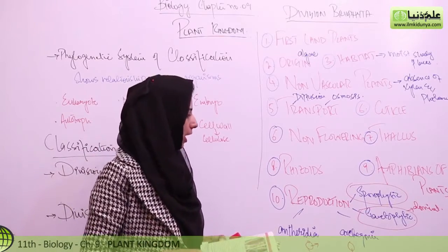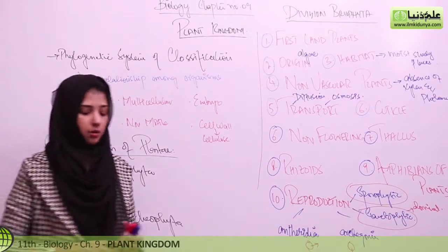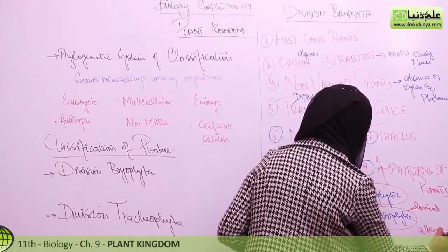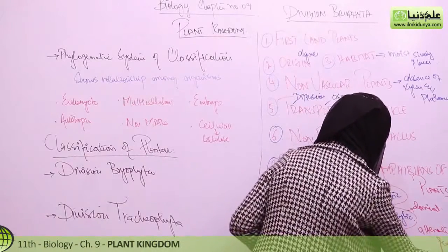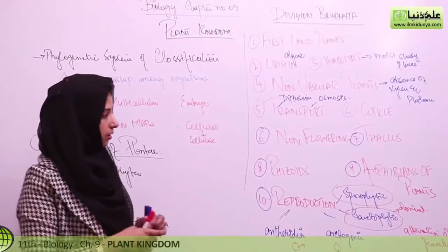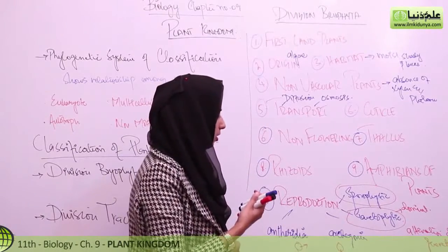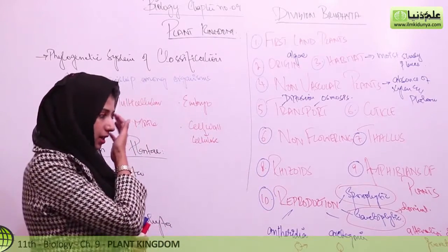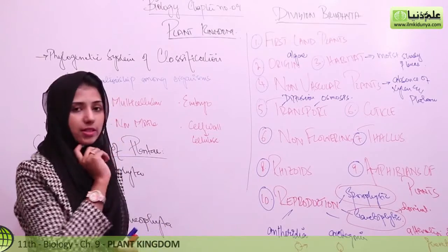This is the alternation of generations phenomenon. Alternation of generations means that one generation and the second generation alternate. Gametophyte helps to grow sporophyte, and similarly sporophyte again helps to grow gametophyte after the release of spores.